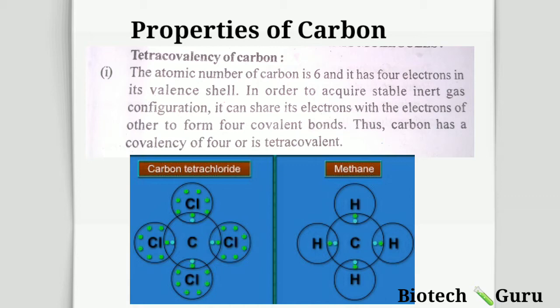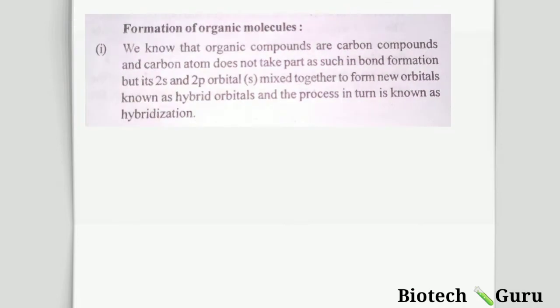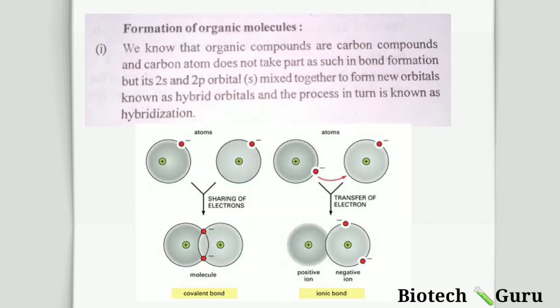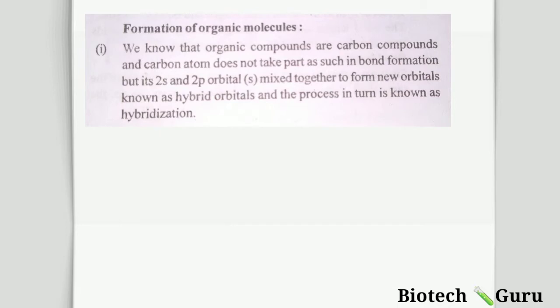Some basic properties of carbon: formation of organic molecules. We know that organic compounds are carbon compounds. Organic compounds that we studied are hydrocarbons. Carbon atoms form bonds not by transferring electrons but by sharing. Its 2s and 2p orbitals mix together to form new orbitals known as hybrid orbitals. Carbon's electronic configuration is 1s², 2s², 2p². The outermost orbitals, 2s² and 2p², mix together to form new orbitals — and these new orbitals are called hybrid orbitals.